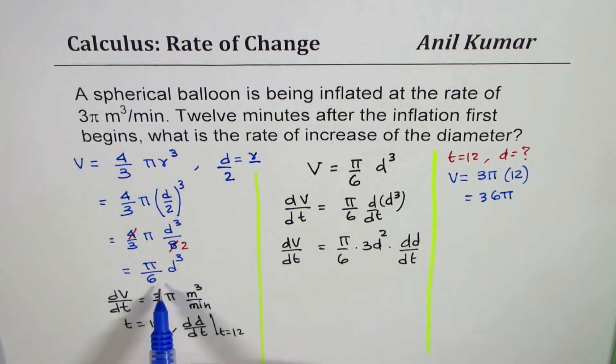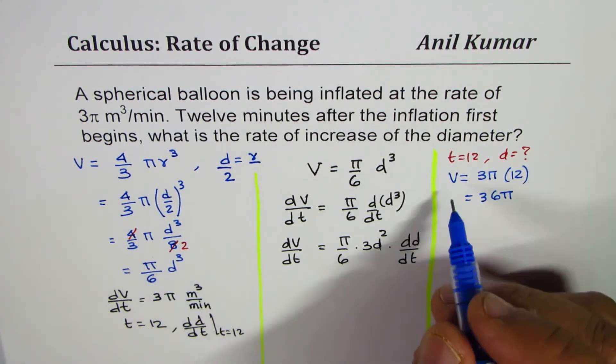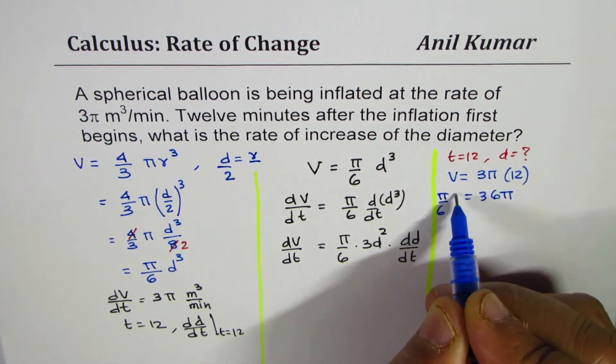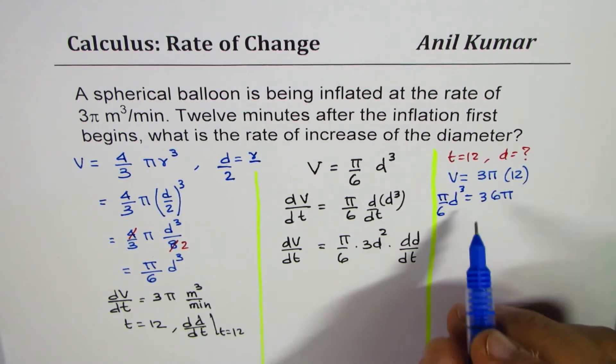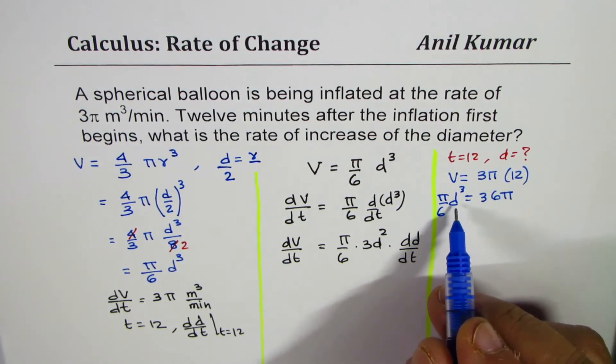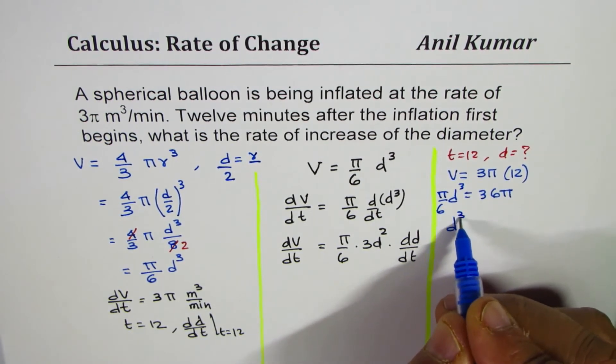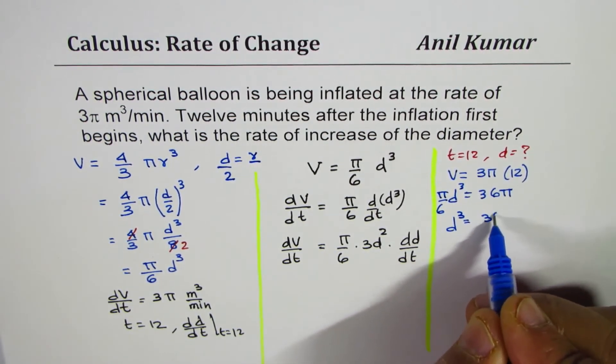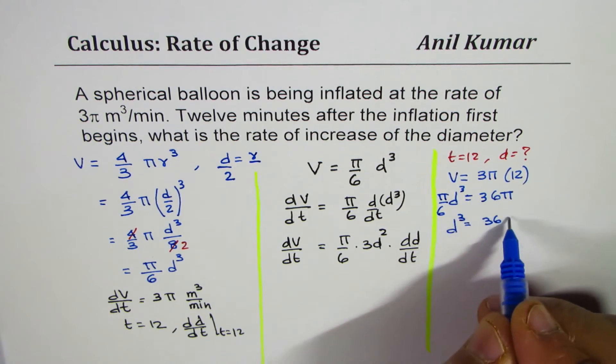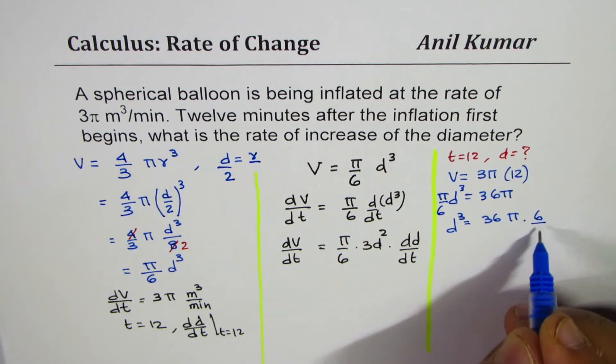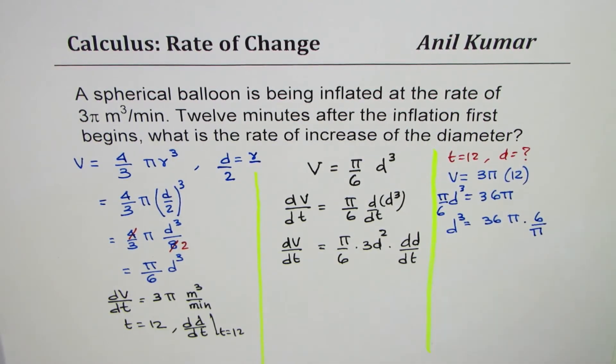As far as volume is concerned, we have a formula: π/6 d³. So we can write 36π = π/6 d³. From here we can find diameter, so d³ equals 36π divided by π/6. π and π cancel out.